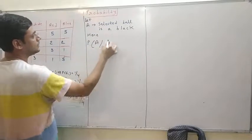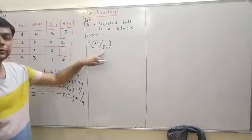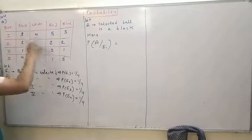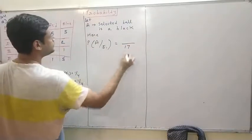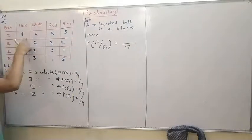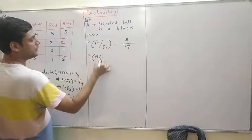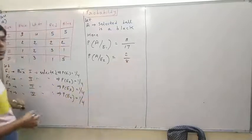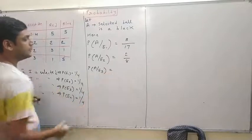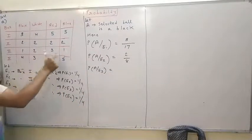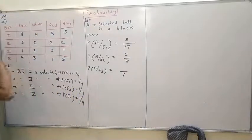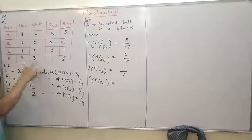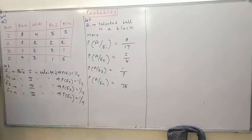Using Bayes' theorem. If we know box one is selected, total balls are 3 plus 4 plus 5 plus 5 equals 17, and black balls are 3, so P(A|E1) equals 3 by 17. P(A|E2): total balls are 8, black balls are 2, so 2 by 8. P(A|E3): total balls are 2 plus 3 plus... giving 7 total, black balls given. P(A|E4): total balls are 30 and black balls are 4, so 4 by 30.